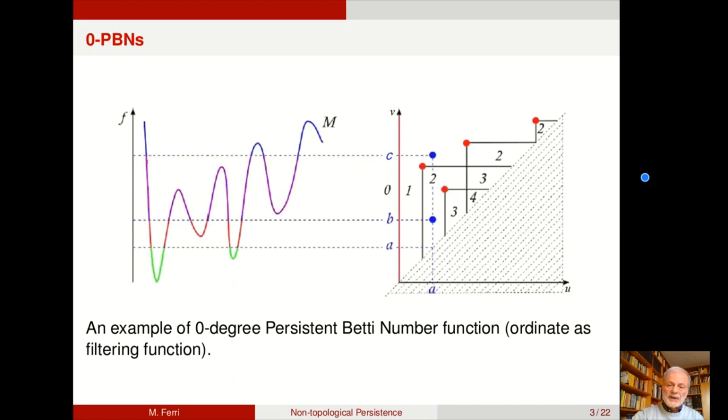But how come is it so successful? In our opinion, it all depends on the particular shape of superimposed triangles that persistent Betti number functions have. This is what makes it possible to condense all relevant information into these points, which we call corner points.